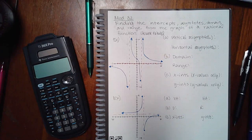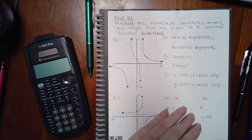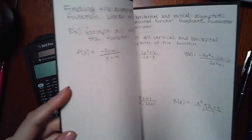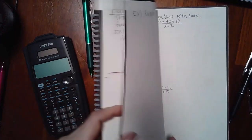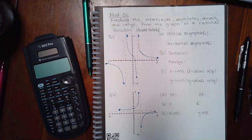Now we're getting into module 32. In module 32, we start to shift a little bit from polynomial information to rational functions. Rational functions just means functions that have fractions, so you'll have x's in the denominator. So this is the beginning of it. The first thing we need to do when it comes to rational functions is talk about something called asymptotes.